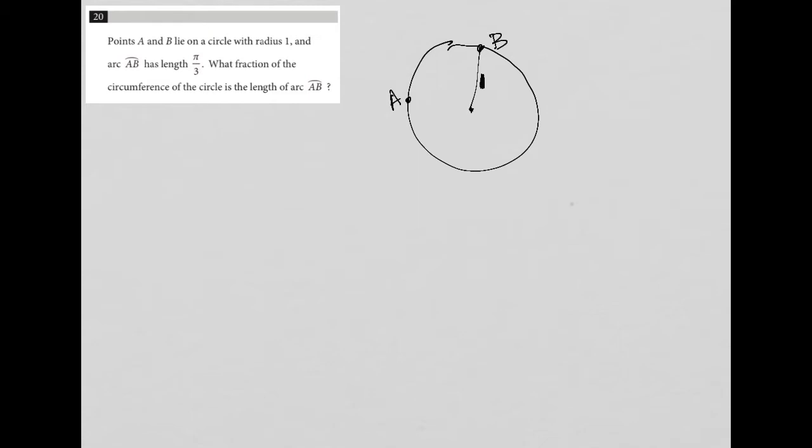And arc AB has length π over 3. So this arc right here, this portion of the circle is π over 3. What fraction of the circumference of the circle is the length of arc AB?